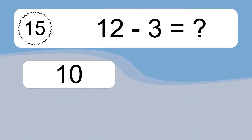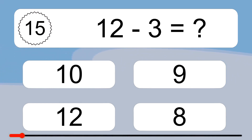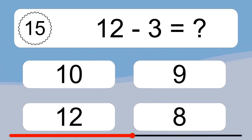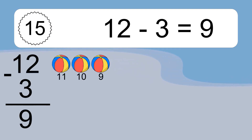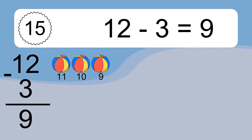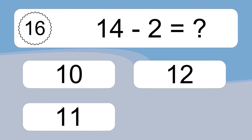Twelve minus three equals what? Twelve minus three equals nine. Let's count it: 11, 10, 9.